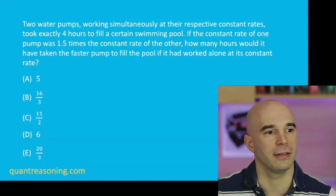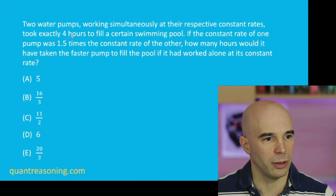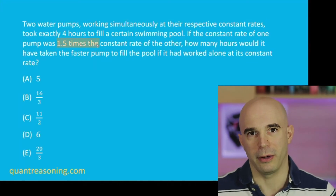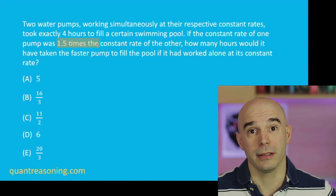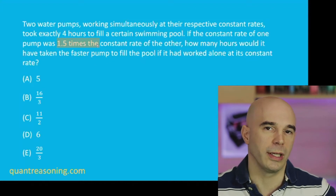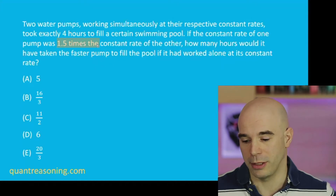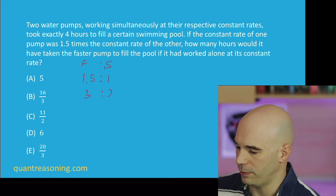The motivation for me to use a different approach here is the words '1.5 times' — that's ratio language. Something is one and a half times as much as something else. We're talking about rates, so the ratio of rates would be three to two. If you start with fast to slow and expand by a factor of two, now it's three to two.